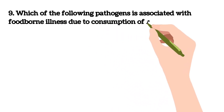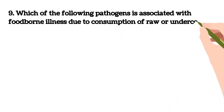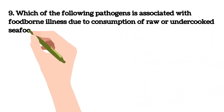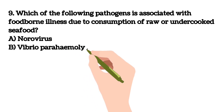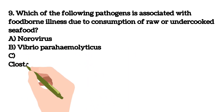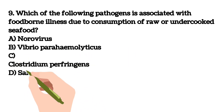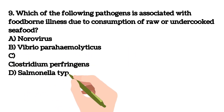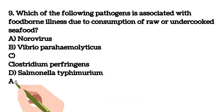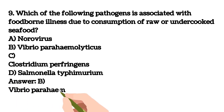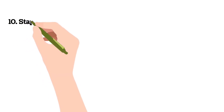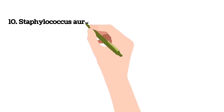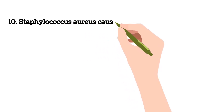Ninth question: which of the following pathogens is associated with foodborne illness due to consumption of raw or undercooked seafood? A) Norovirus, B) Vibrio parahaemolyticus, C) Clostridium perfringens, D) Salmonella Typhimurium. Answer is B) Vibrio parahaemolyticus.